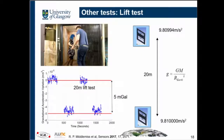We have also done another test: we took our devices into a lift. As we moved between floors, we could measure the change in g. As we move away from the Earth's center, gravity decreases. Between different floors, we are sensing a change of 5 milligrams, which is 5 micro-g.